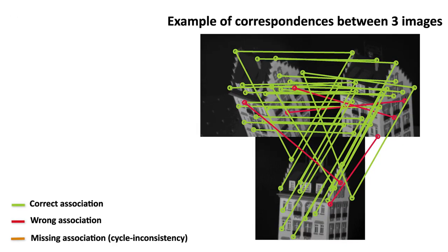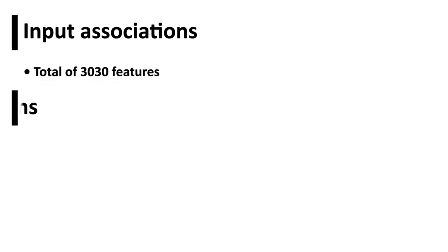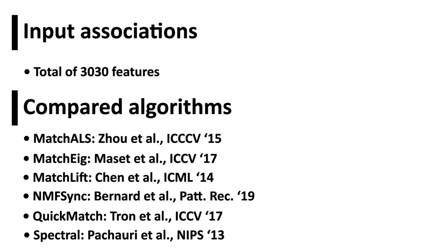This dataset consists of 101 images. Correspondence between feature points of all image pairs are obtained using standard feature matching routines. These putative matches, which contain error and are not cycle-consistent, are used as input in CLEAR and other state-of-the-art algorithms.